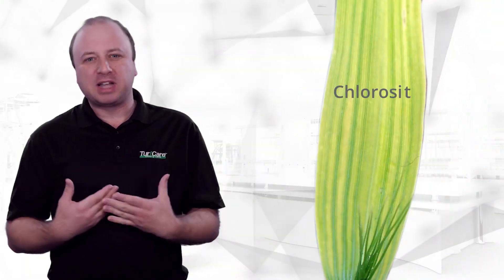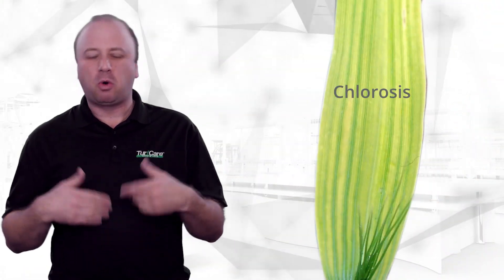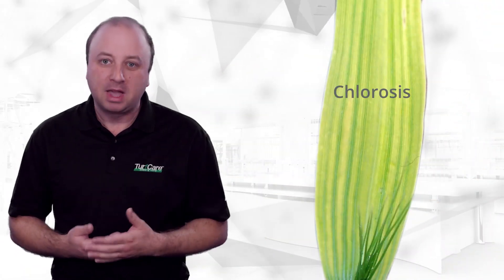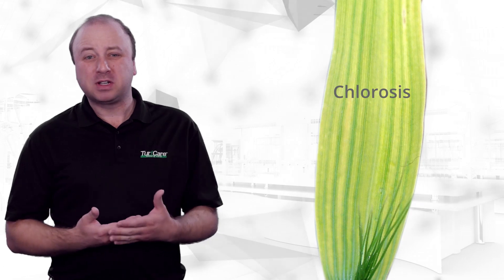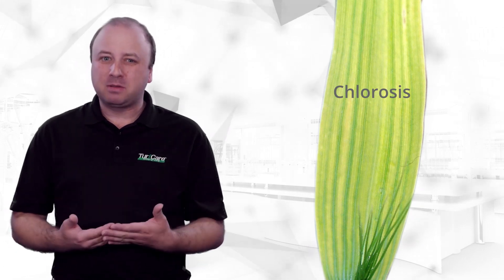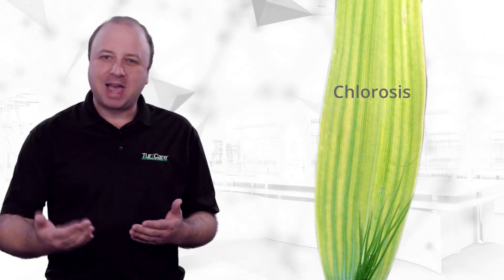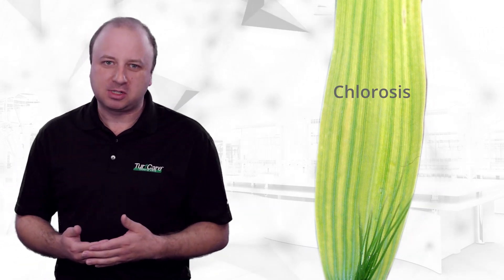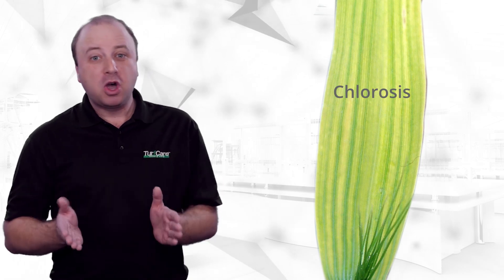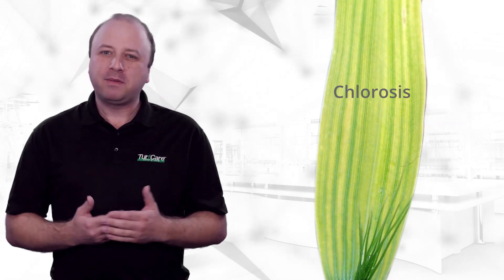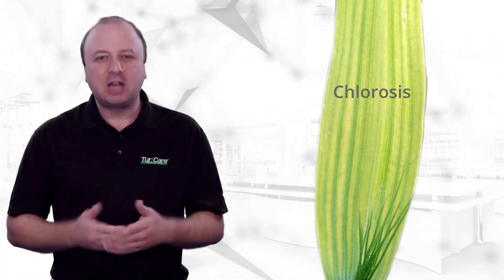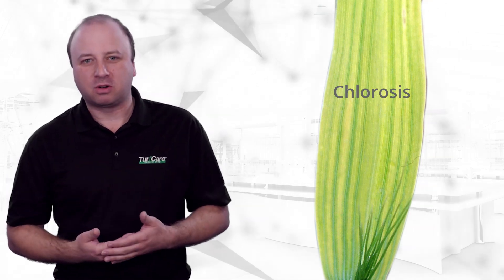Chlorosis is a common condition in turf and other plants where iron and magnesium deficiencies can cause plants to turn a pale or yellow color. If your turf is exhibiting these symptoms, you may have an iron or magnesium deficiency.